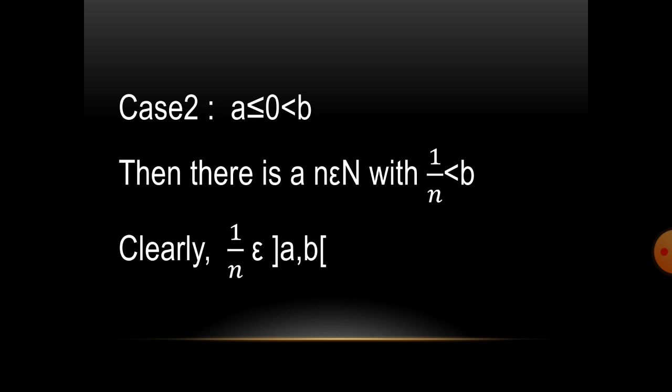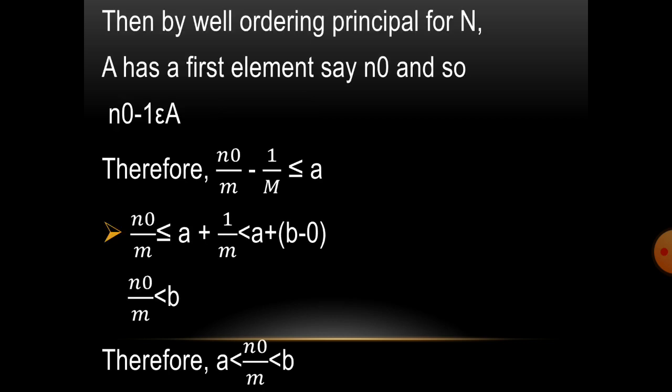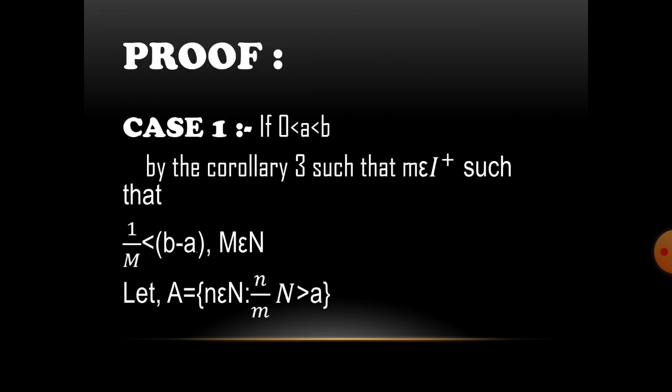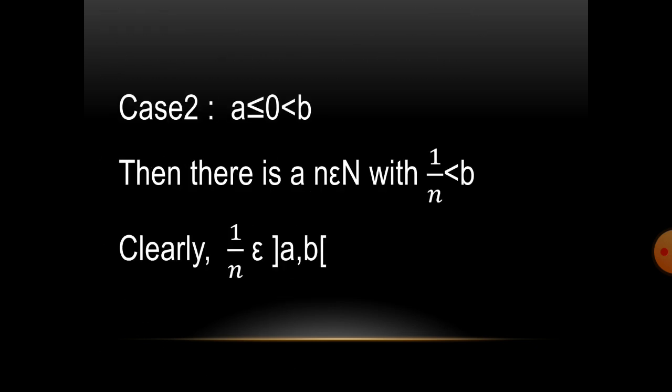In Case 2: A ≤ 0 < B. In Case 1, we proved 0 < A < B. In Case 2, we prove A ≤ 0 < B. Then there is an N belongs to N with 1/N < B. Clearly, 1/N belongs to the open interval (A,B).